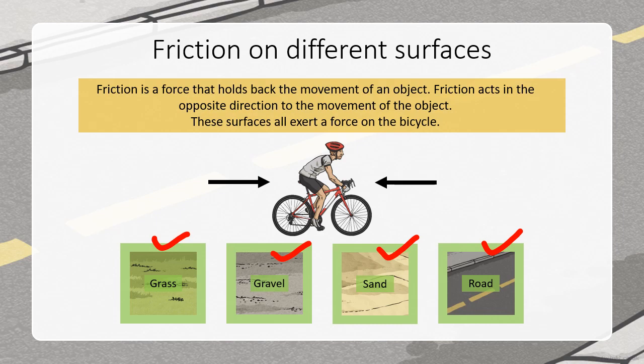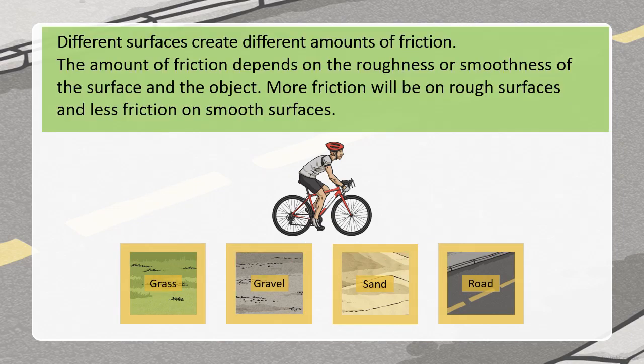When you want to move fast while riding a bicycle, friction will slow down your speed. This is a cyclist trying to move fast, and this is the friction trying to slow them down. Friction always works in the opposite direction, because all these surfaces exert a force on the bicycle.